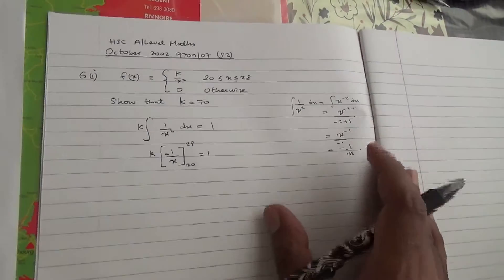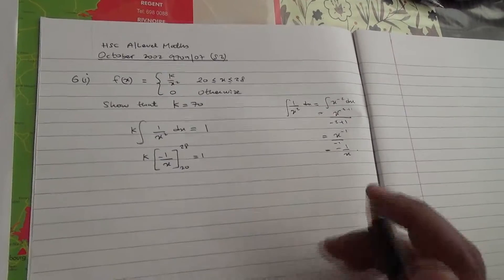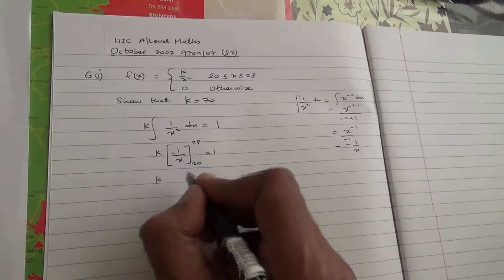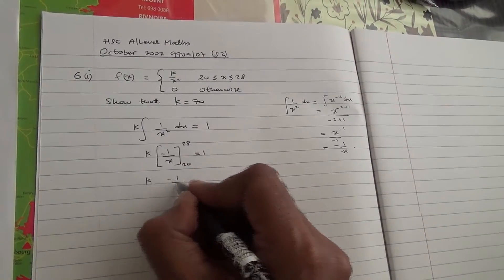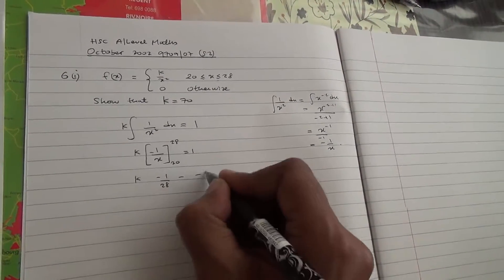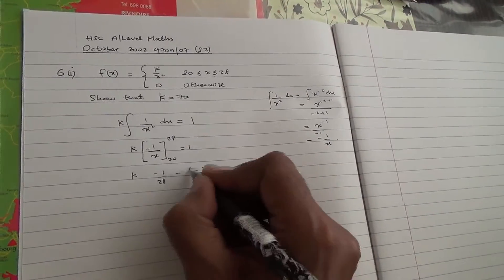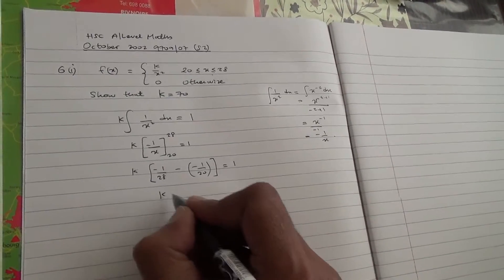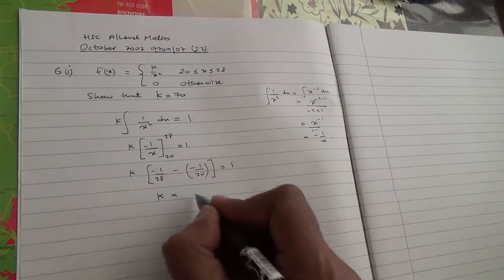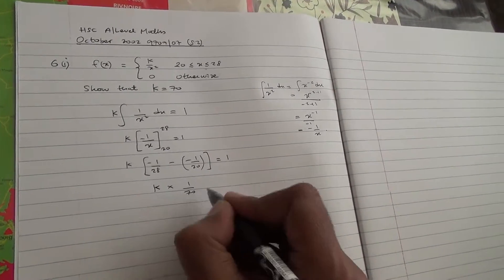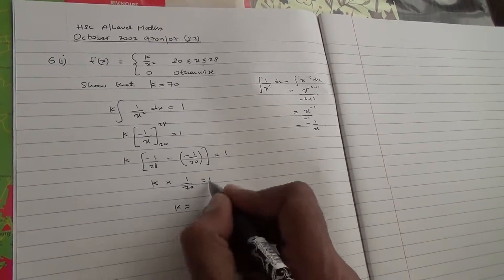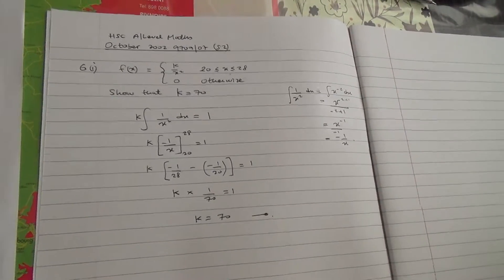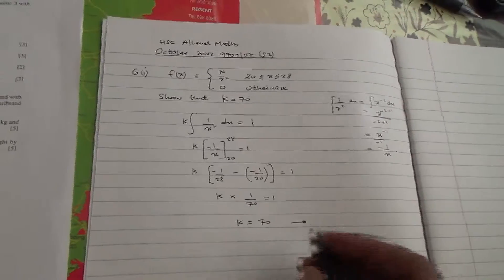So applying the limits 28 and 20, we have k times (minus 1 over 28 minus minus 1 over 20) = 1. Computing on the calculator gives k times 1 over 70 = 1. Therefore k is equal to 70. This has been shown for the first part.